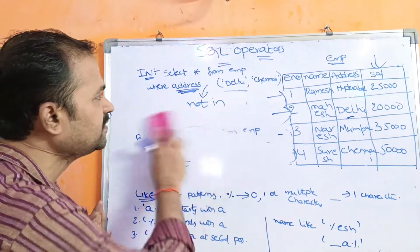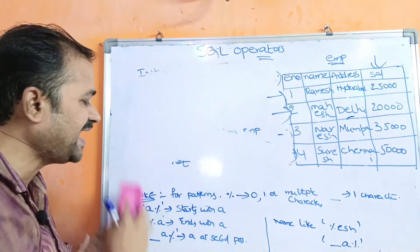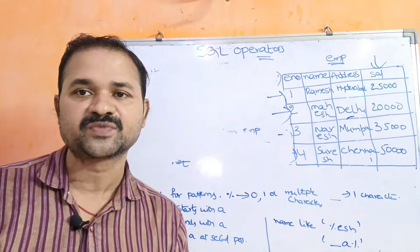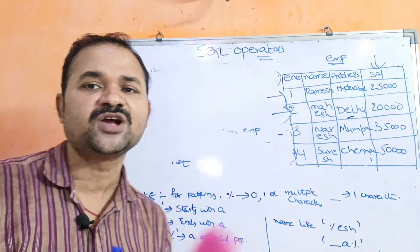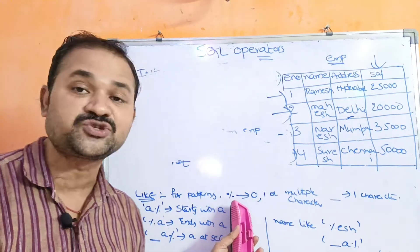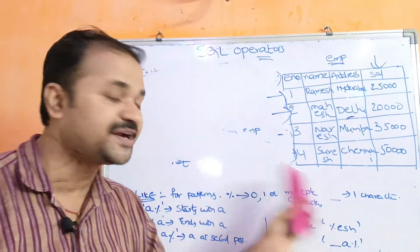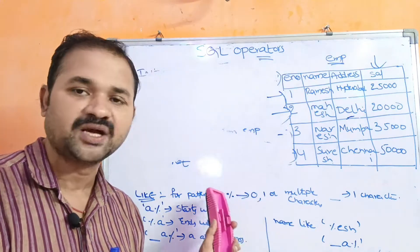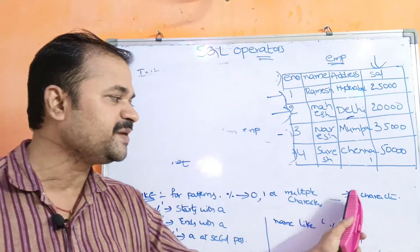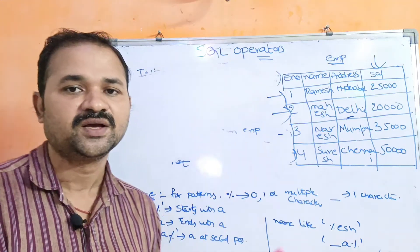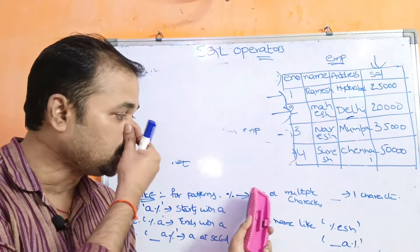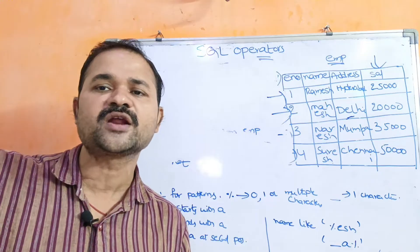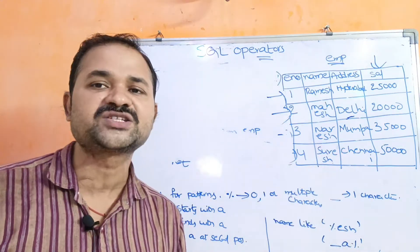IN and BETWEEN are now covered. Now let us see about LIKE. LIKE is mainly useful to display strings for pattern matching — to display records based on pattern matching. Here we mainly use two patterns: percentage (%) or underscore (_). Underscore matches only one character, whereas percentage matches zero or one or multiple characters — zero or more number of characters.